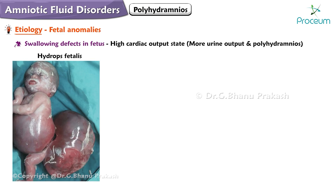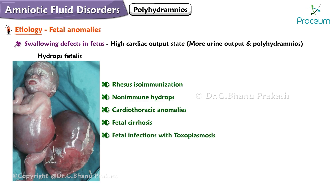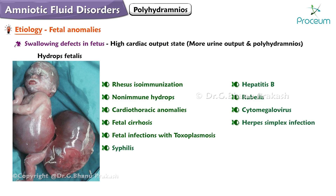Hydrops fetalis — due to rhesus isoimmunization, non-immune hydrops, cardiothoracic anomalies, fetal cirrhosis, and fetal infections with toxoplasmosis, others such as syphilis and hepatitis B, rubella, cytomegalovirus, herpes simplex, and parvovirus B19 — are often associated with hydramnios.